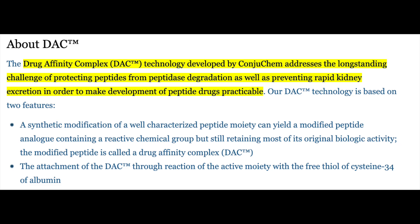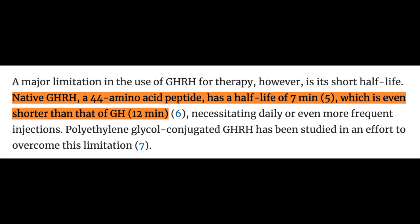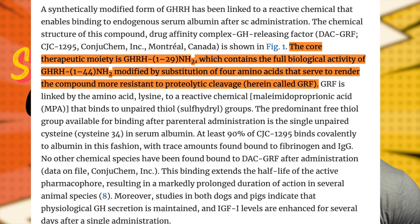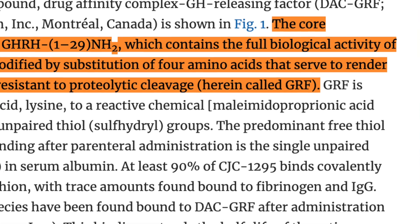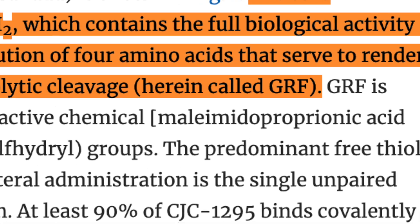GHRH itself is comprised of 44 amino acids, and as is popular with the peptide space, this structure is manipulated to recreate its activity at the growth hormone-releasing hormone receptor at the pituitary. Notably, growth hormone-releasing hormone is also known as GRF, or growth hormone-releasing factor. One of the tough things about this space is the myriad of terms used interchangeably, so it's worth knowing that many of these terms do indeed mean the same thing.